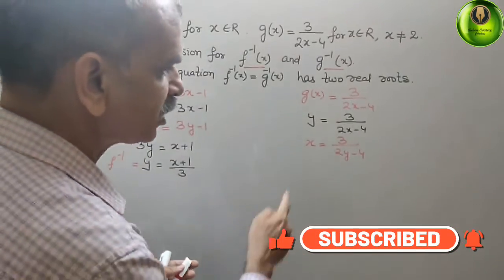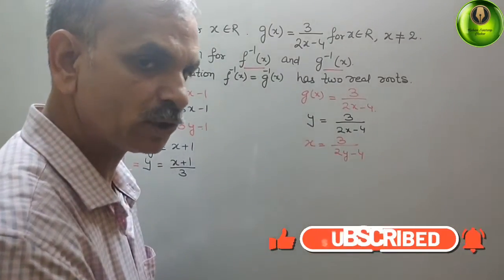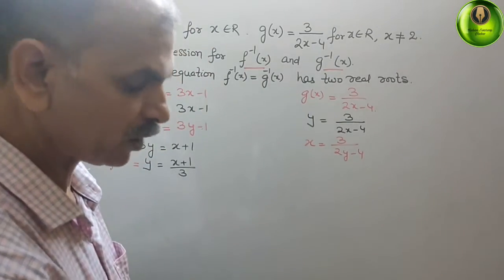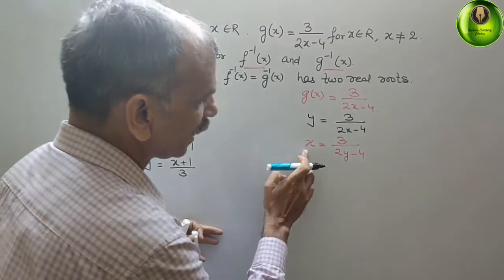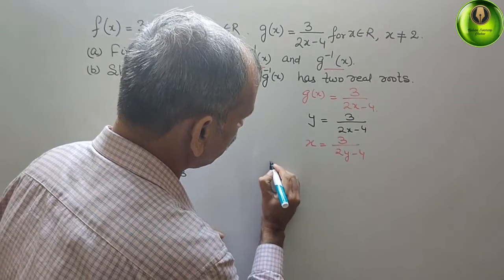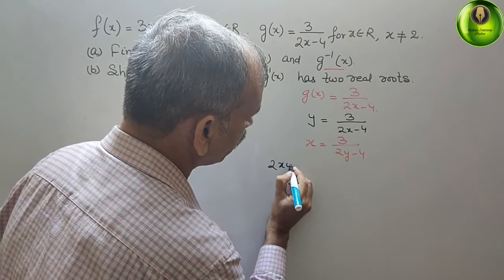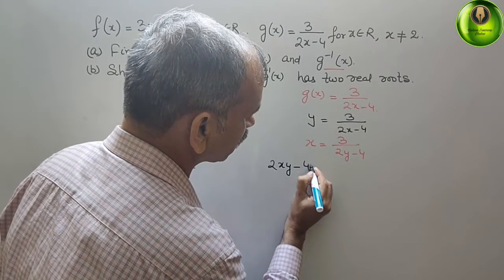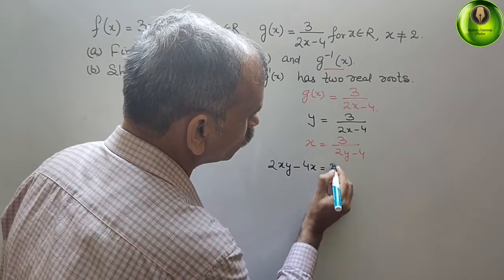Now comes here, again we have to do the same thing. Just multiply this thing. So it will be 2xy minus 4x, that is equal to 3.